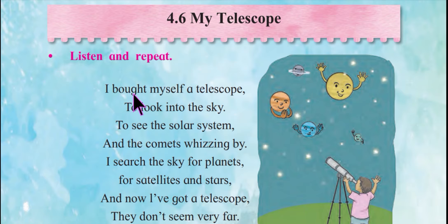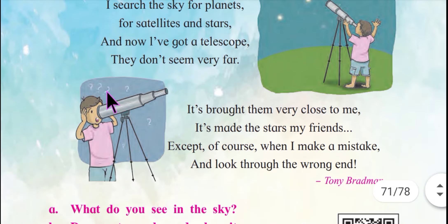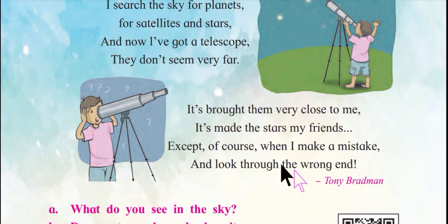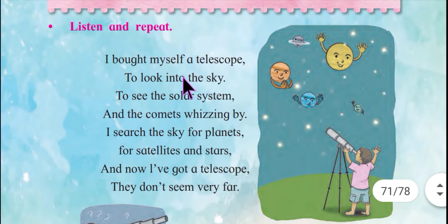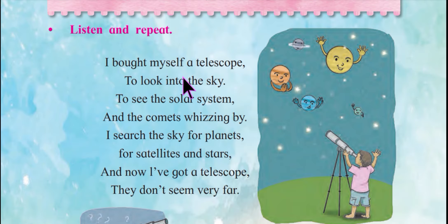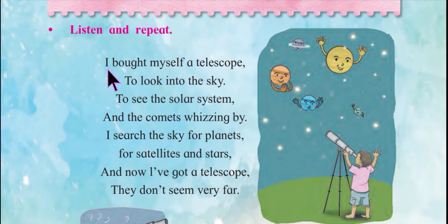I bought myself a telescope. Who wrote this poem? Tony Bradman. The poet told us what he did — he said, 'I bought myself a telescope.' 'Bought' means to get something by paying money for it.